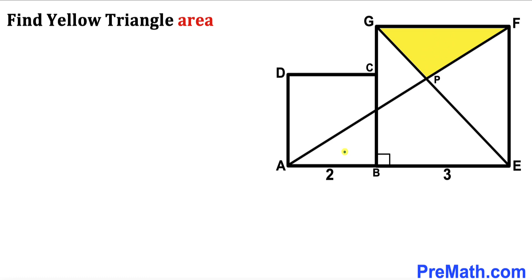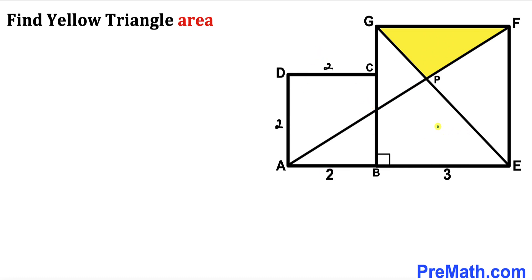Since we are dealing with these two squares, all side lengths of each square are equal. If this side length is 2 then all sides of the smaller square are 2. Likewise, for the bigger square, if this side length is 3 then all sides of the larger square are 3.